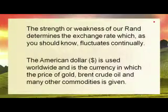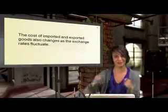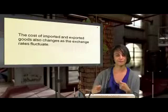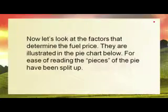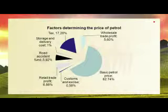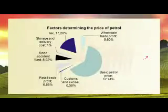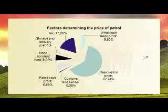The strength or weakness of our rand determines the exchange rate, which fluctuates continuously. The American dollar is used worldwide, and it's the currency in which the price of gold, Brent crude oil, and many other commodities is given. The cost of imported and exported goods changes as the exchange rate changes, and this involves petrol and oil. Looking at a pie chart of factors that determine our petrol price: the basic price of petrol is 62.74%, with the rest made up of customs, road accident funds, tax, and wholesale trade profit.